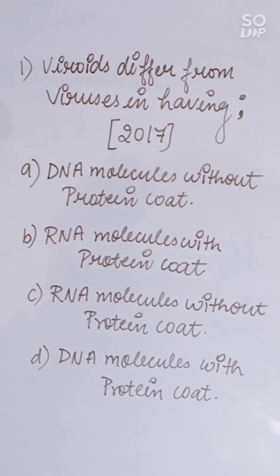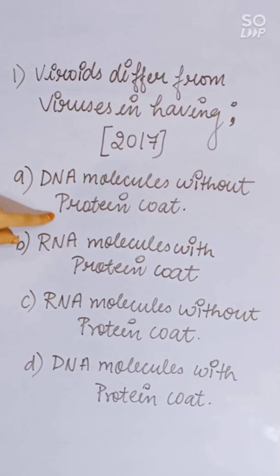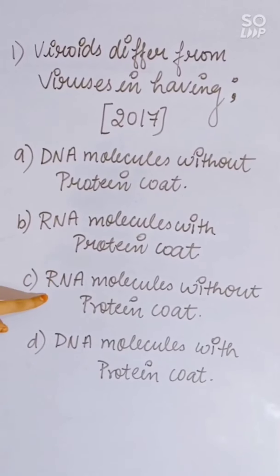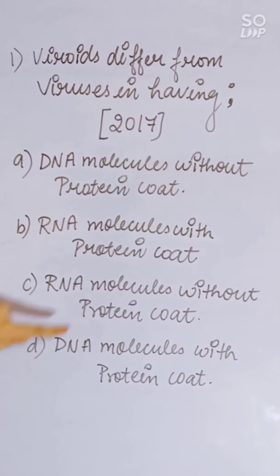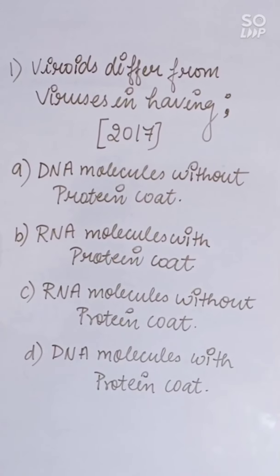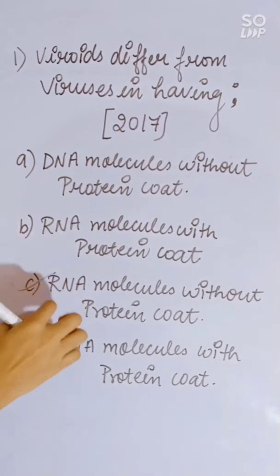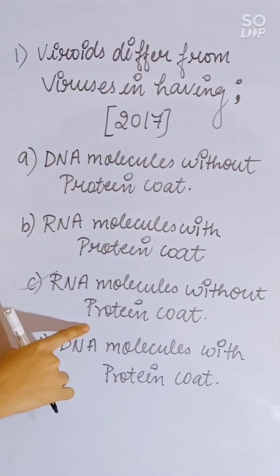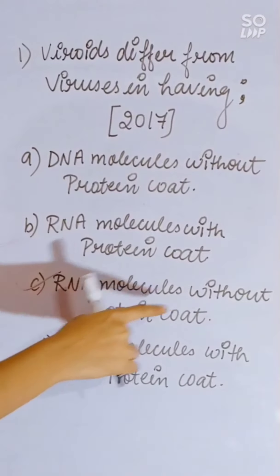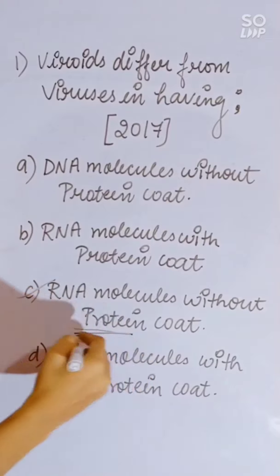2017 question: Viroids differ from viruses in having: DNA molecule with protein coat; RNA molecule with protein coat; RNA molecule without protein coat; or DNA molecule without protein coat. Correct answer is option three — RNA molecule without protein coat, because viroids lack a protein coat.